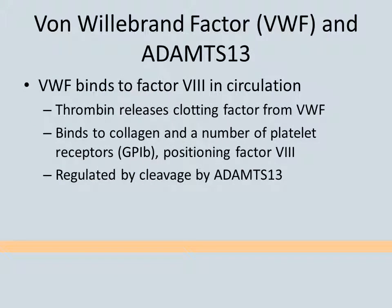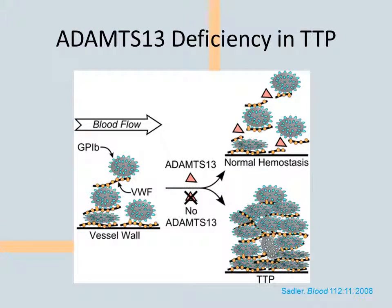TTP is due to factor VIII dysregulation. Von Willebrand factor binds to factor VIII and also binds to a number of proteins, including some on platelets, to position factor VIII where it may be needed for clotting. Cleavage of von Willebrand factor prevents it from clumping platelets and causing spontaneous clots. ADAMTS-13 normally cleaves von Willebrand factor; if its activity is reduced, thrombosis can run wild.